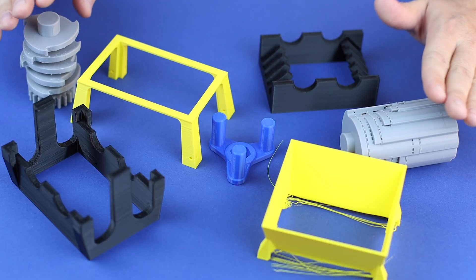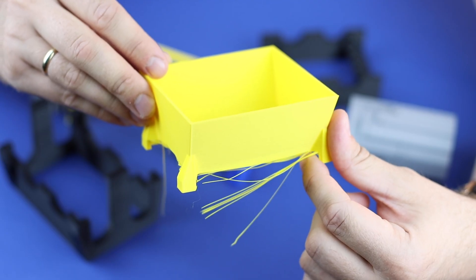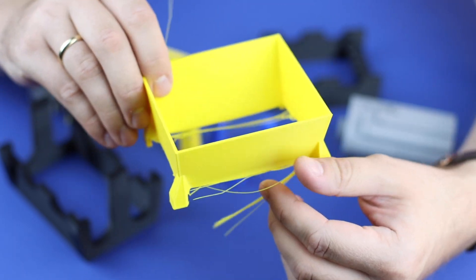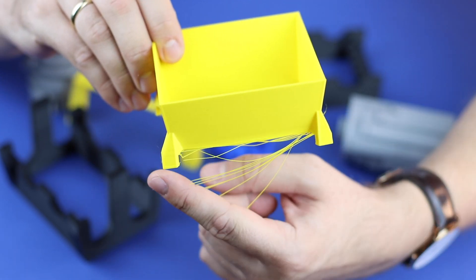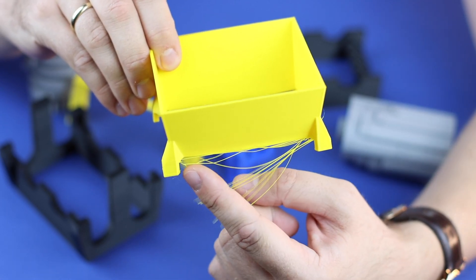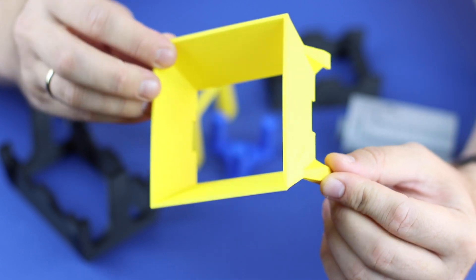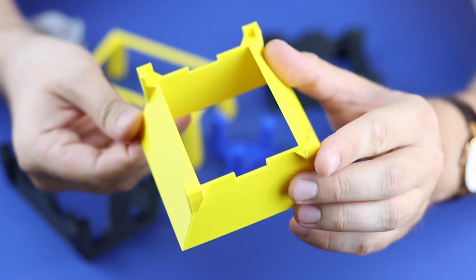Now all the parts are printed and we can assemble this model. Also I reprinted one part because I made a mistake. I should print it upside down, but I didn't do that. So I printed like this and the printer was going through the air and it left this string. So I made the second one, it was printed upside down and it looks much better.